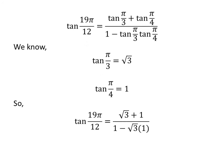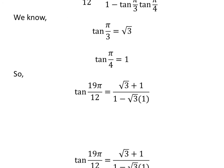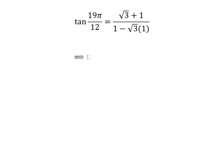We get tangent of 19 times pi upon 12 is equal to square root of 3 plus 1 upon 1 minus square root of 3 times 1. Further simplification gives us tangent of 19 times pi upon 12 is equal to 1 plus square root of 3 upon 1 minus square root of 3.